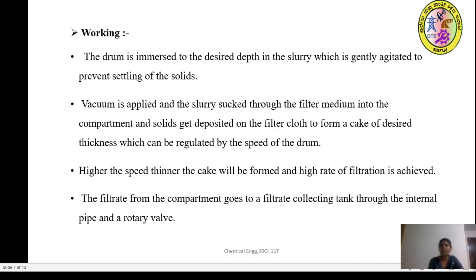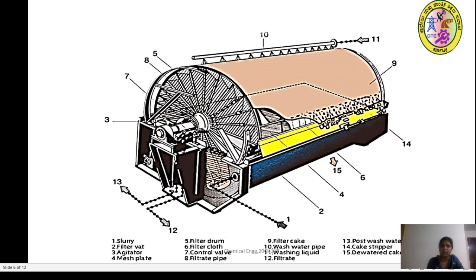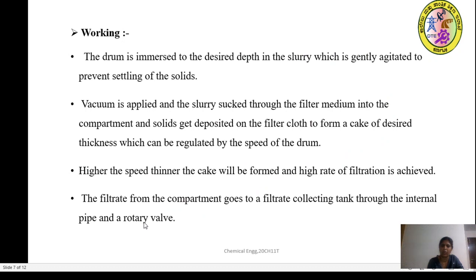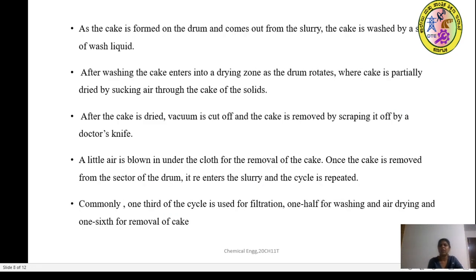The filtrate from the compartment goes to the filtrate collecting tank through the internal pipe and the rotary valve. Once the cake comes out of the slurry zone, the cake is washed by the wash liquid. Then the cake enters into the drying zone as the drum rotates, where the cake is partially dried by sucking air through the cake of solids.